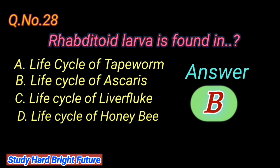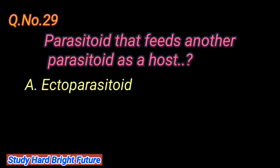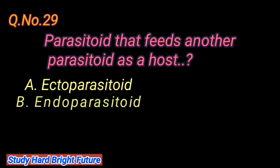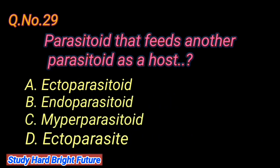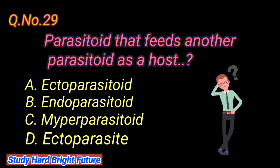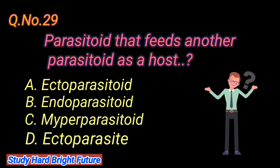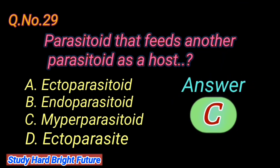Question number 29: A parasitoid that feeds on another parasitoid as a host is. A. Ectoparasitoid, B. Endoparasitoid, C. Hyperparasitoid, D. Ectoparasite. The right answer is C. Hyperparasitoid.